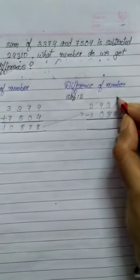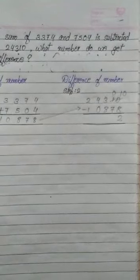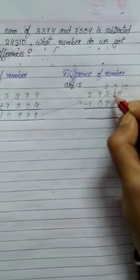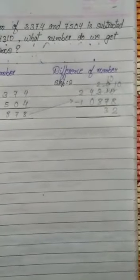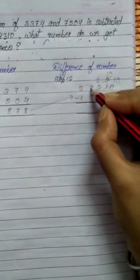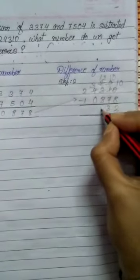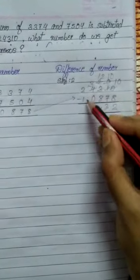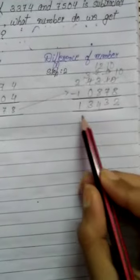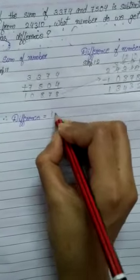10 minus 8 is 2. Now 0 minus 7 is not possible, so we borrow from 3. This 3 becomes 2 and this 0 becomes 10. 10 minus 7 is 3. Now 2 minus 8 is not possible, so we borrow from 4. This 4 becomes 3 and this 2 becomes 12. 12 minus 8 is 4. Now 3 minus 0 is 3 and 2 minus 1 is 1. So the answer is 13,432. Therefore, the difference equals 13,432.